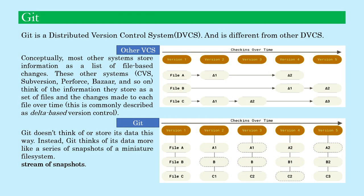Git is a distributed version control system and is different from other distributed version control systems. Conceptually, most other systems store information as a list of file-based changes. These other systems — for example CVS, Subversion, Perforce, Bazaar, and so on — think of the information they store as a set of files and the changes made to each file over time.